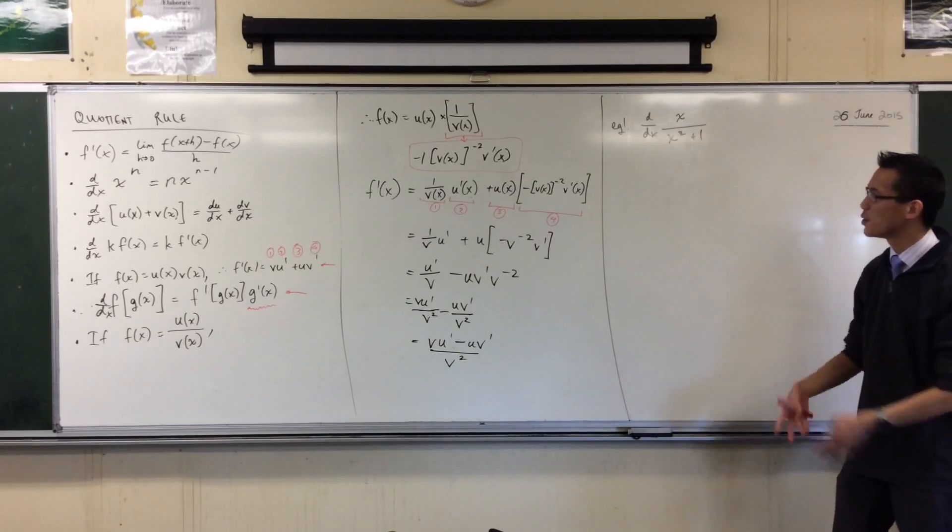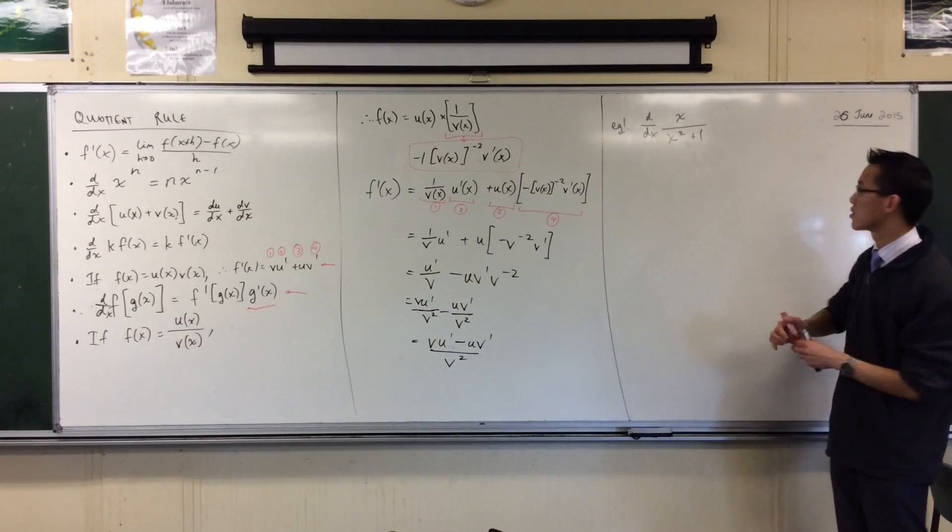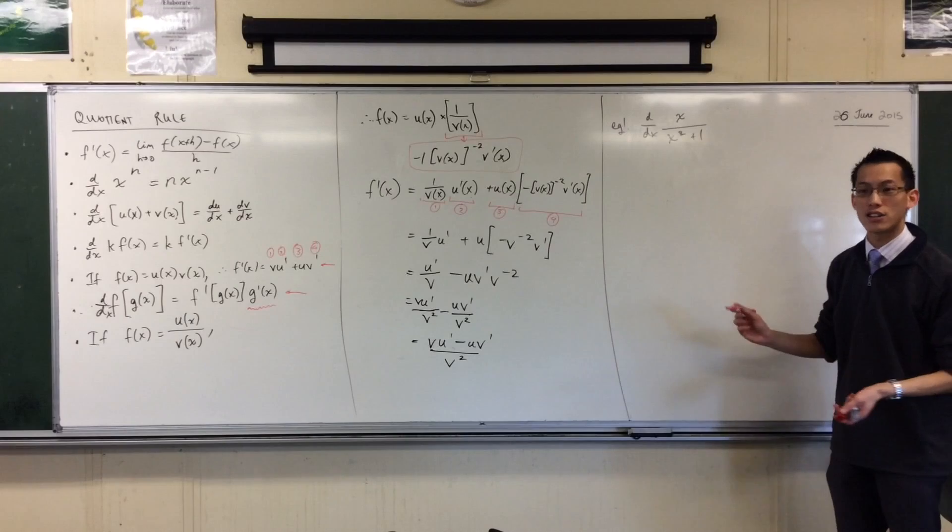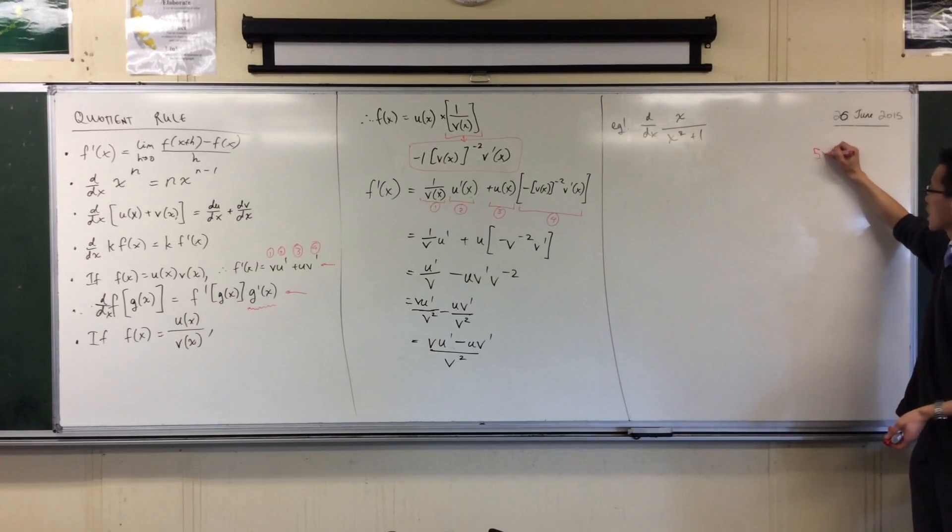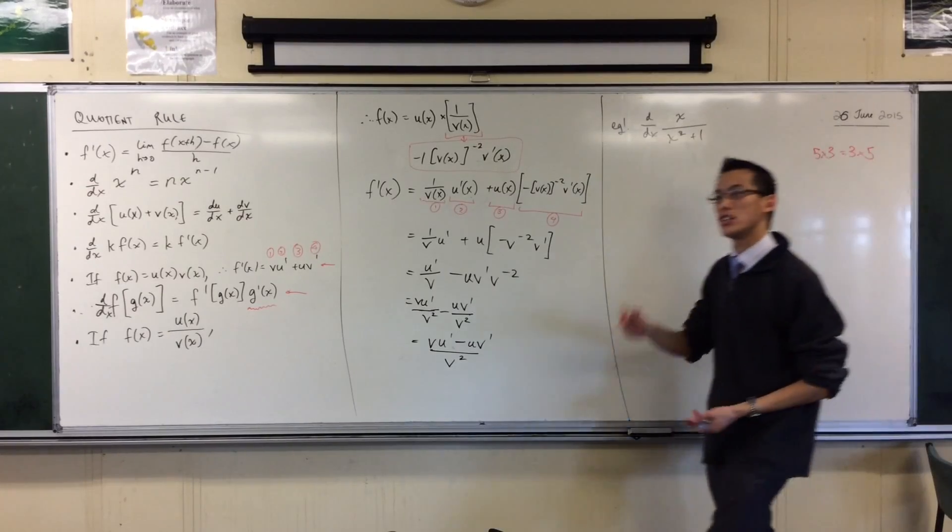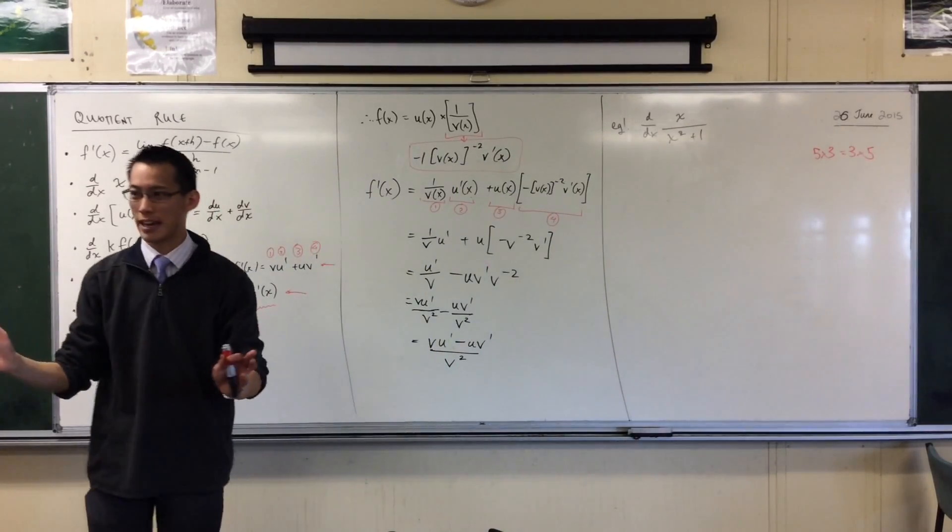We've been doing some products, we've been doing some chain rule, let's have a go at this. This is a question. So the first thing that I do, now watch out here because we know that 5 times 3 is the same as 3 times 5. Multiplication is commutative. You can change the order, no problems.